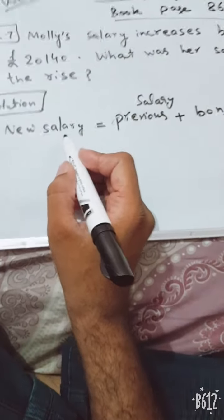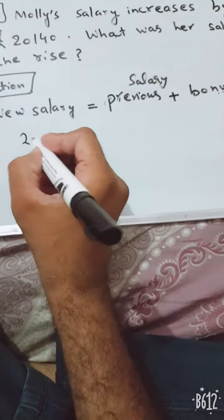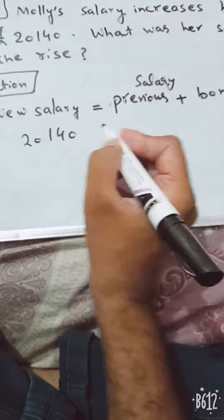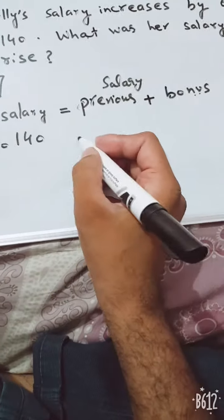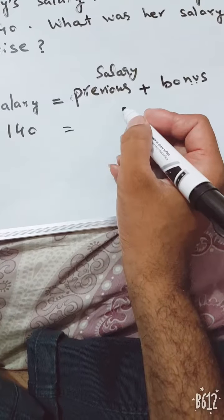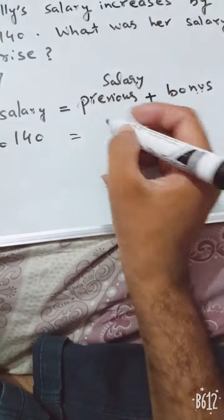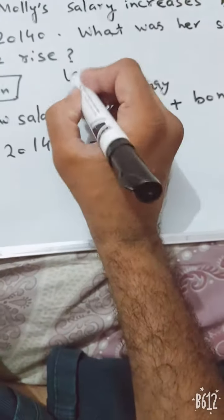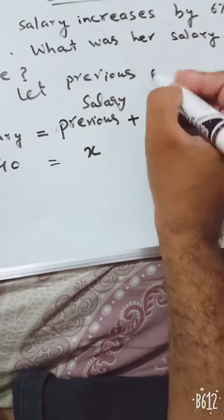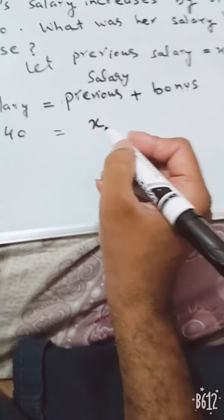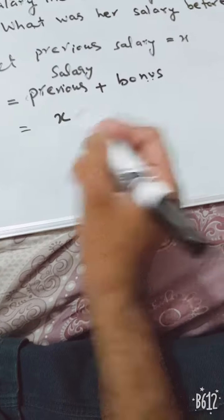In the question, the new salary is given which is £20,140. And the previous salary we don't know. We can suppose it as x. We can let previous salary equal x. We can put previous salary as x here.